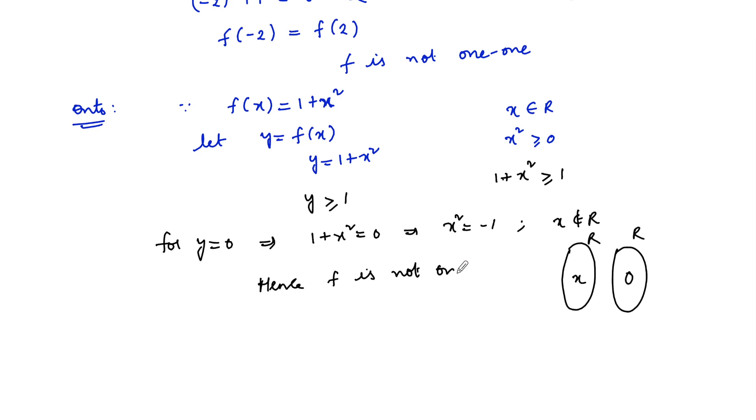We can conclude that the given function f(x) = 1 plus x squared is neither one-to-one nor onto.